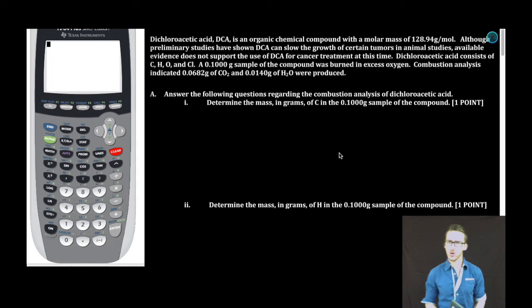Dichloroacetic acid, DCA, is an organic chemical compound with a molar mass of 128.94 grams per mole. Although preliminary studies have shown DCA can slow the growth of certain tumors in animal studies, available evidence does not support the use of DCA for cancer treatment at this time. Dichloroacetic acid consists of carbon, hydrogen, oxygen, and chlorine. A 0.1000 gram sample of the compound was burned in excess oxygen. Combustion analysis indicated 0.0682 grams of carbon dioxide and 0.0140 grams of water were produced. Part A. Answer the following questions regarding the combustion analysis of dichloroacetic acid. Subpart I: Determine the mass in grams of carbon in the 0.1000 gram sample of the compound.